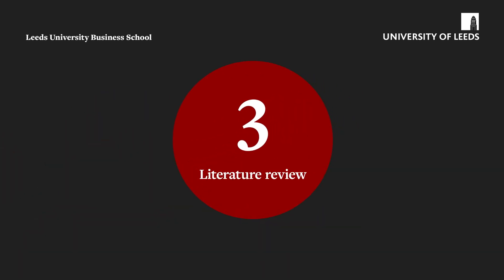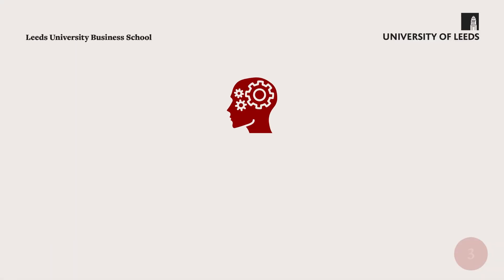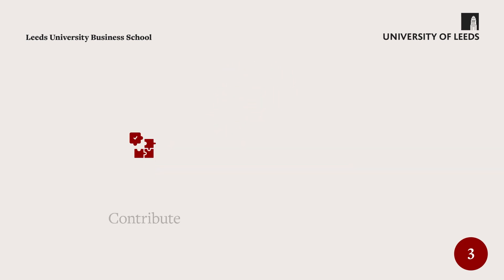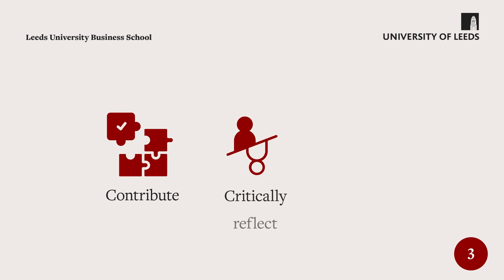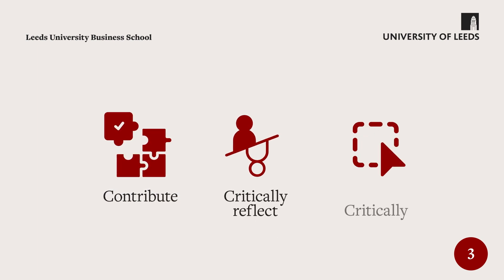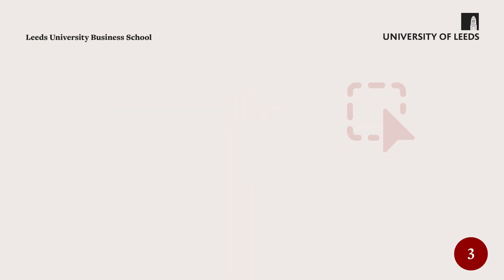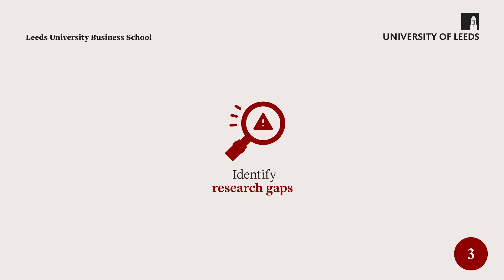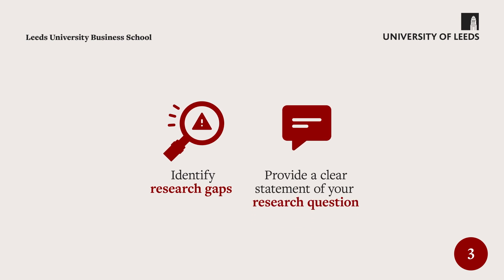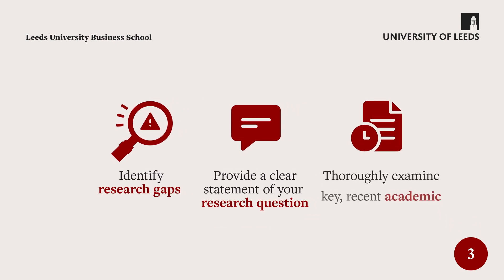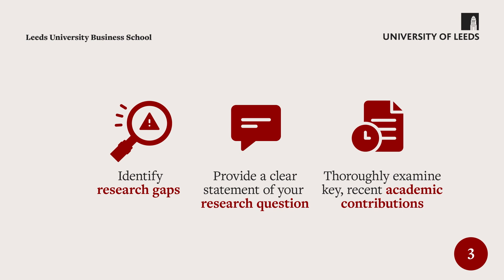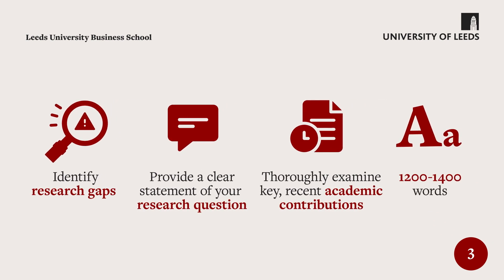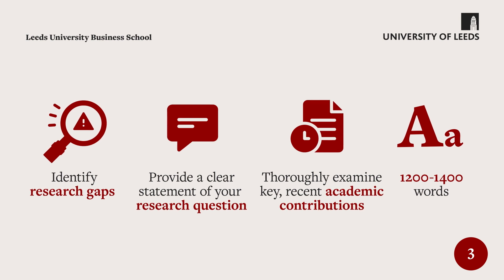Step 3: Write your literature review. Demonstrate your knowledge of current literature surrounding your topic, how your research will contribute to it, and your ability to critically reflect on and critically select it. Your literature review should identify existing research gaps or problems. Provide a clear statement of your research question. Thoroughly examine key recent academic contributions within your research area, and be between 1,200 and 1,400 words.